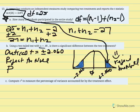Rejecting the null means the probability of obtaining a t statistic of 2.071 is less than our alpha of 0.05. There is less than a 5% chance of obtaining that t value if the null is true. Next we calculate the effect size statistic r squared — the percentage of variance due to treatment.